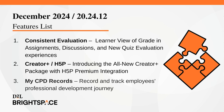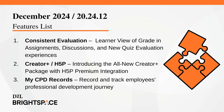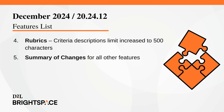This month we're highlighting the following features: consistent evaluation with preview of the learner view of grades in assignments, discussions, and new quiz evaluation experiences; CreatorPlus and H5P introduces the all-new CreatorPlus package with H5P Premium integration; record and track employees' professional development journey with MyCPD Records; criteria descriptions limit increased to 500 characters in the Rubrics tool; and a summary of all the other features this month.